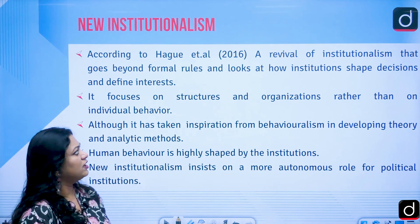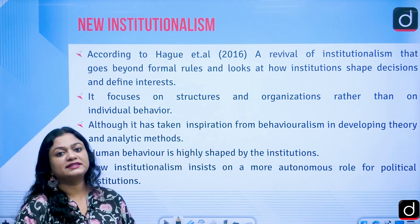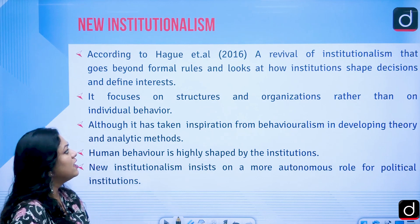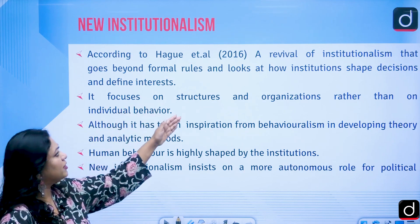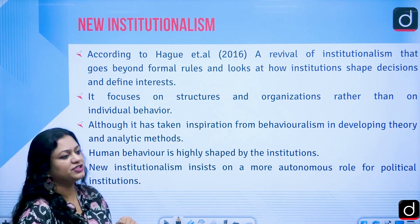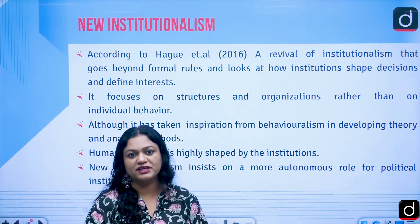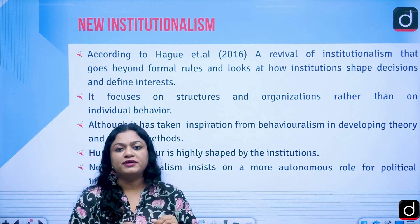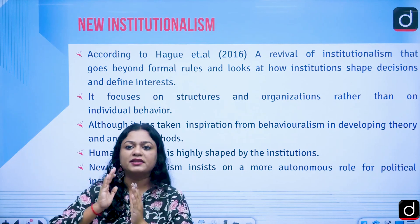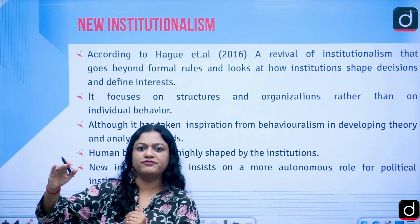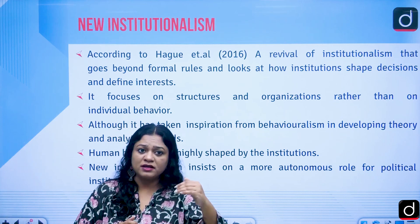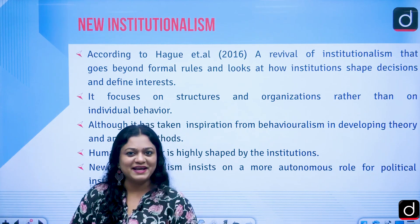According to Hague et al., a revival of institutionalism — what we call new institutionalism — emerged in the 1970s, going beyond formal rules and looking at how institutions shape decisions and define interests. Under new institutionalism, there was a new thrust: new institutionalists believed they should not just look at formal rules and norms, but also at the receiving end.